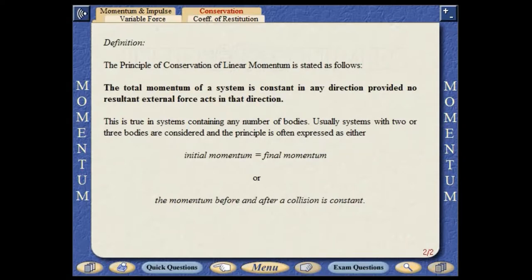The principle of conservation of linear momentum is stated as follows. The total momentum of a system is constant in any direction, provided no resultant external force acts in that direction. This is true in systems containing any number of bodies. Usually systems with two or three bodies are considered, and the principle is often expressed as either initial momentum equals final momentum, or the momentum before and after a collision is the same.